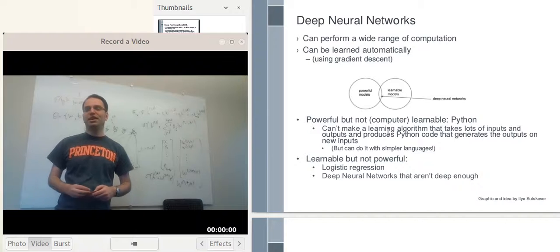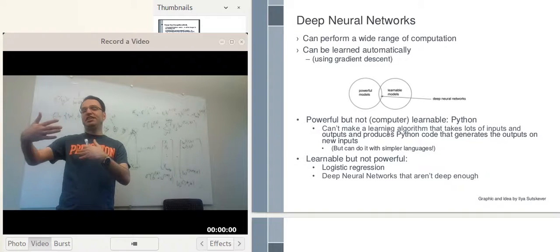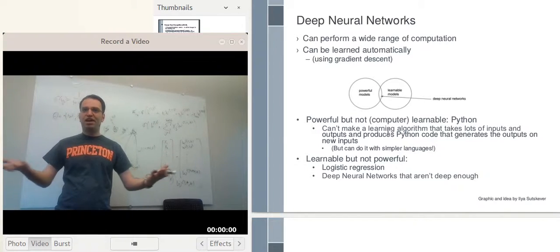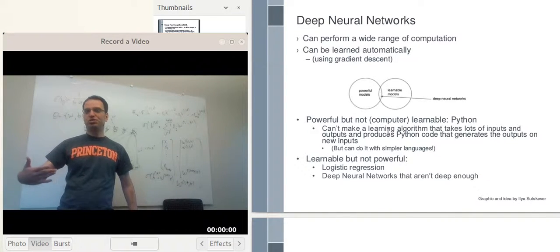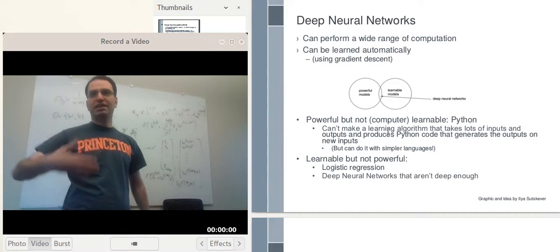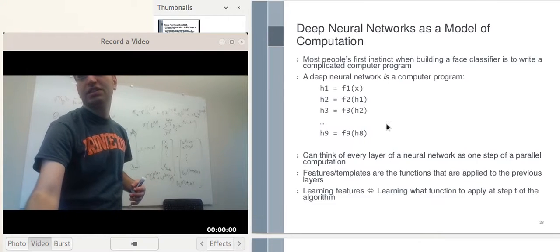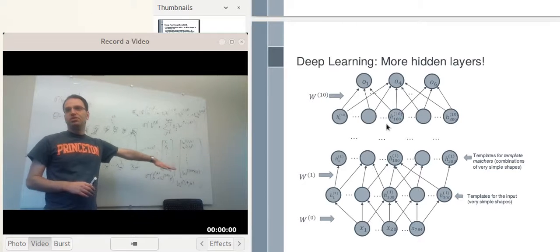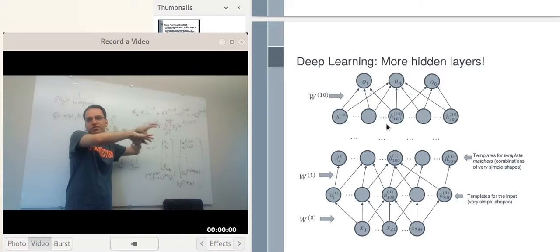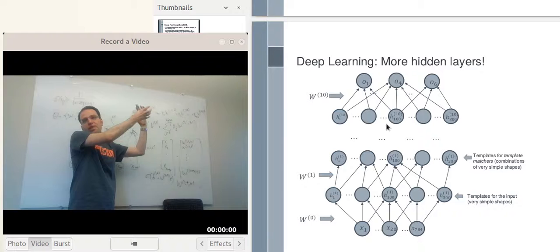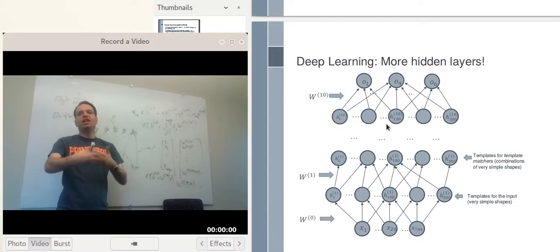Something else that's learnable but not powerful enough is a deep network that's not deep enough or not wide enough — one that doesn't have enough neurons. Logistic regression is very shallow; even one hidden layer might not be enough if you're just matching one set of templates to an image. You might need more layers to have a hierarchy of things you detect: the first layer detects simple features, the second layer combines evidence for those simple features to make more complex features, and so on, up until you start detecting eyes and higher-level structures. That's a hypothesis — not necessarily exactly how things work.